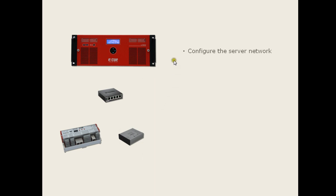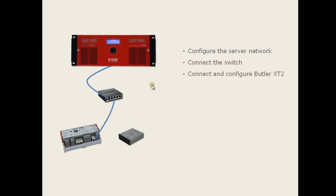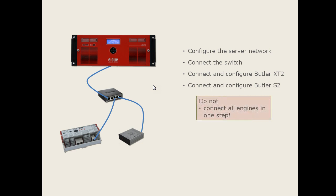You will then configure the server network, and this step has two parts. The first part is to configure the Windows system and the LAN driver, and the second step is to configure the programmer of the lighting application suite. Step two is to connect the switch to the server, then connect and configure the Butler XT2, and connect and configure the Butler S2. But do not connect all engines in one step.